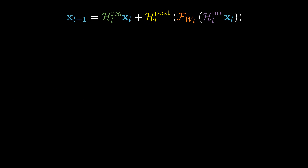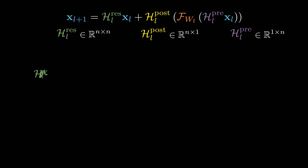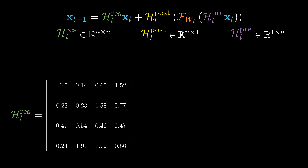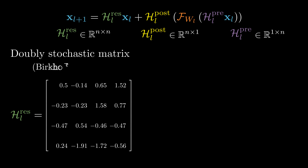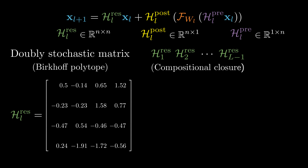But how do we stabilize the training? We need to ensure that these linear mappings are well-behaved. The feature mixing matrix can have arbitrary numbers because it is unconstrained. The key idea is to make this matrix a doubly stochastic matrix, also known as the Birkhoff polytope. The requirement is that all elements must be positive and each row and column must sum to 1. The resulting composite residual mapping across multiple layers also remains doubly stochastic, effectively stabilizing the training and preventing exploding or vanishing gradient problems.